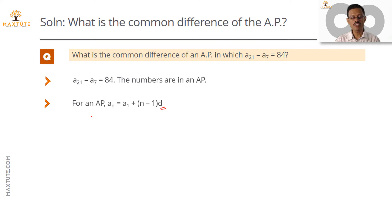What we're going to do is write both A21 and A7 to resemble this formula. So A21 is equal to the first term A1 plus n is equal to 21, so 21 minus 1 into d. Let us simplify and write it as A1 plus 21 minus 1 is 20, so A1 plus 20d is A21.